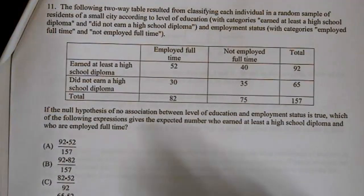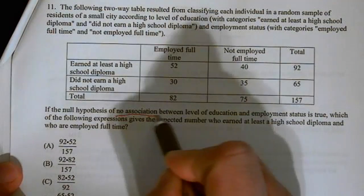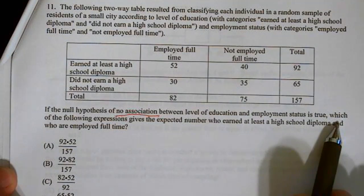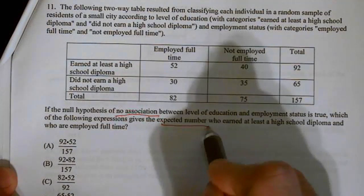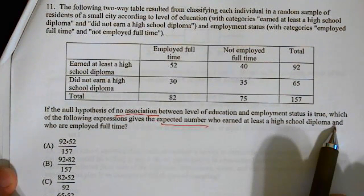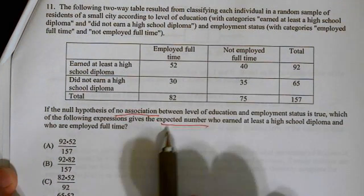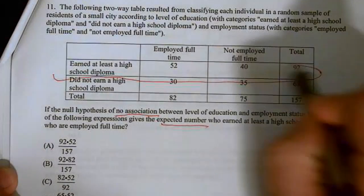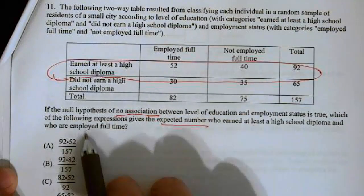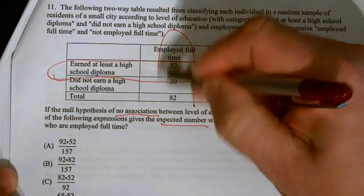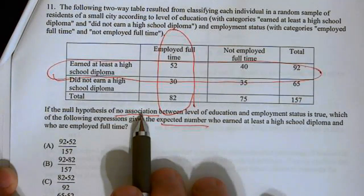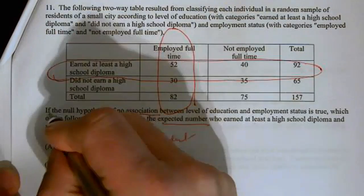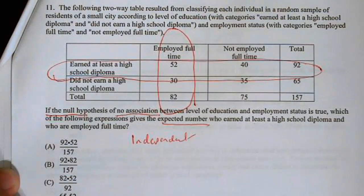If the null hypothesis of no association, and this is something under chi-squared, between level of education and employment status is true, which of the following expressions gives the expected number? Well, who earned at least a high school diploma, so that's this, and who are employed full-time, which is this. And so, they're saying no association. When they say that, they're looking for independent. Now, they said if, which means let's pretend that they're independent.